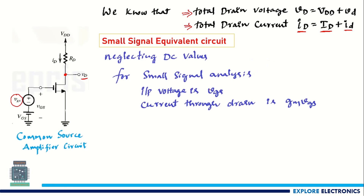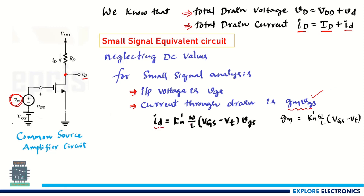For small signal analysis, the input voltage is V_GS, which is the small signal we apply. For this input signal, the current flowing through the drain is G_M times V_GS. The small signal current i_D equals K_N' (W/L)(V_GS - V_T) times v_GS. If we represent G_M, the transconductance, as K_N'(W/L)(V_GS - V_T), then the current expression becomes G_M times V_GS.